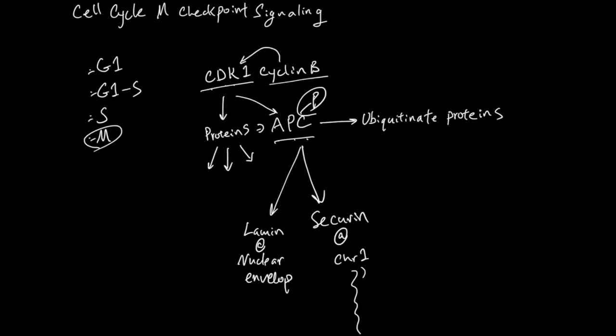And in S phase, you copy the chromosome one to create identical sister chromatid. And these proteins that bind these sister chromatids are securin, and APC wants to get rid of securin to free the sister chromatids from each other.